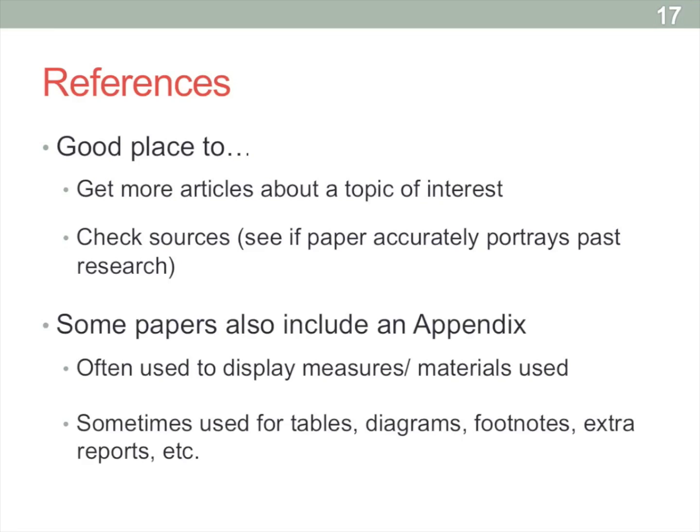And then some articles are even going to include appendix where they'll display measures, materials used, and sometimes any tables, diagrams, footnotes, extra reports, on and on and on that might be of interest to the reader. Usually this is just included for people who might want to replicate the study or if they're using some material that is relatively new. So for this study, there was no appendix because they just used the TIPI, which is a very well-validated and oftentimes used personality inventory, so they kind of assume that you can find that somewhere else.